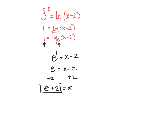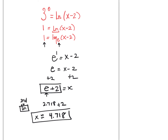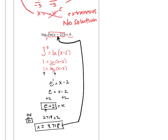Adding 2 to both sides gives e plus 2 equals x — that's the exact value. On your calculator, push the e-to-the-x button (you may need to press second and then natural log), use e to the first power, which gives 2.71828..., and adding 2 gives approximately x equals 4.718. Plugging back in: 4.718 minus 2 is 2.718, which is e, so natural log of e is 1. Then log base 3 of 1 equals 0, which works — that's our verification.